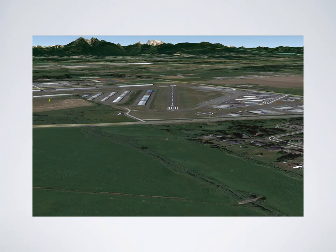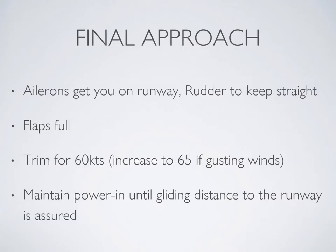Think of the landing as starting all the way back at about 300 feet up and on short final. Your final approach should be focused on these things: ailerons get you on the runway centerline, your rudder keeps your nose straight with the centerline, flaps should be in full by now, and you should be trimmed to 60 knots. In gusty wind conditions, increase airspeed to about 65 knots and maintain power at about 1300 to 1500 RPM until gliding distance to the runway is assured.